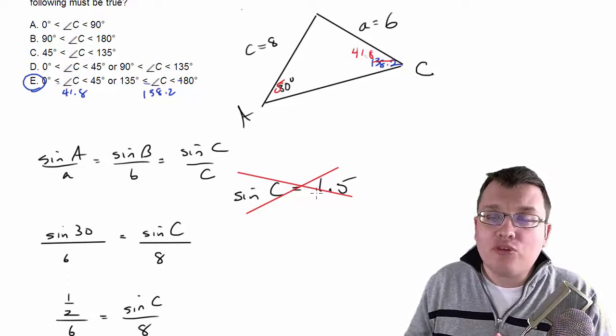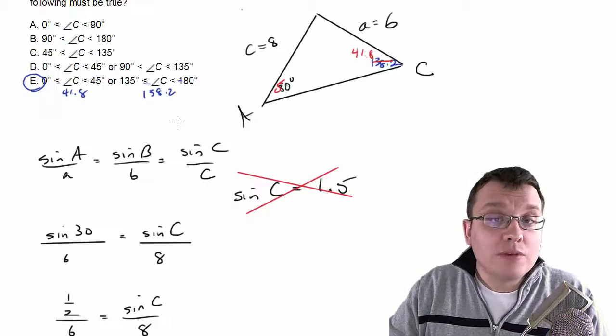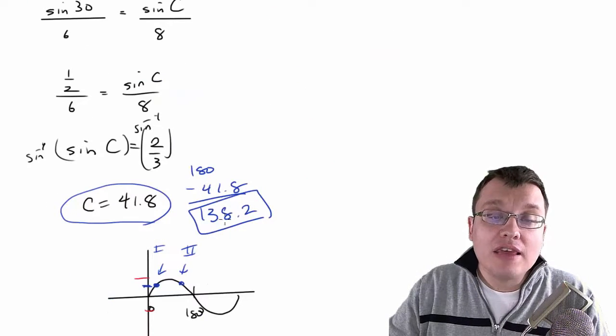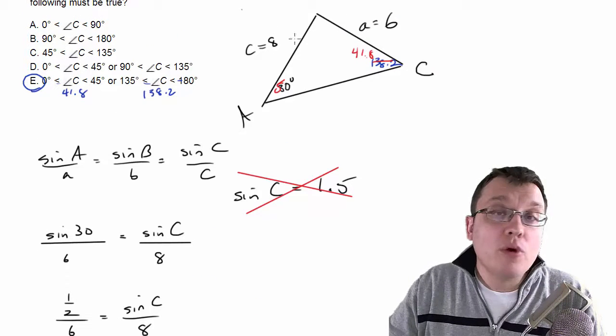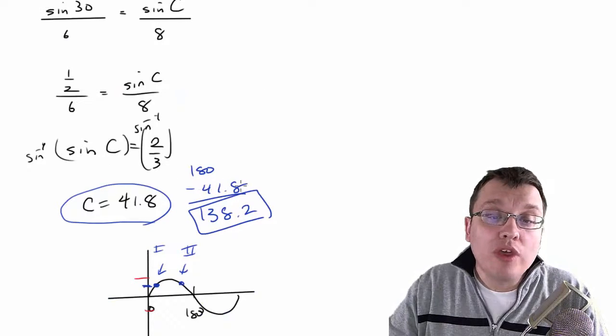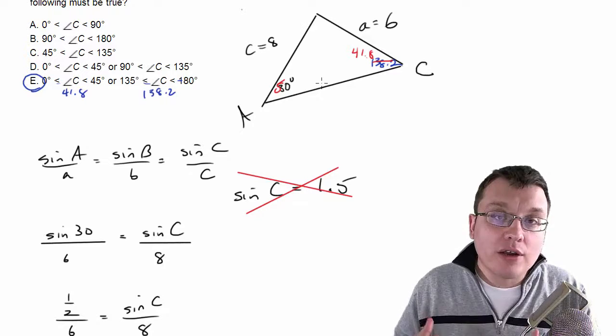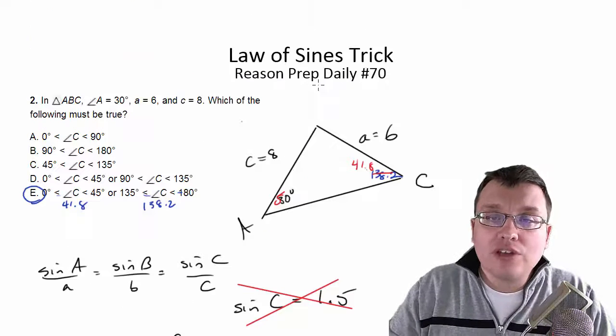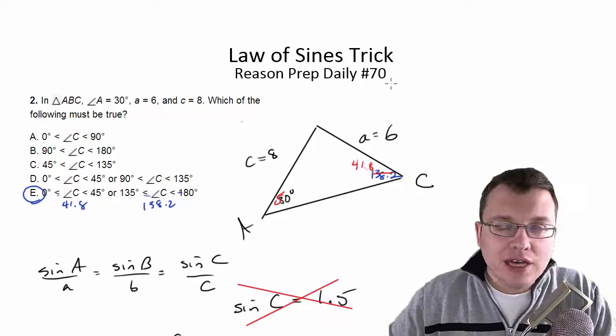And those are your three cases. Either no triangles are possible, and that happens when you can't even get any angle. Two triangles are possible, and that happened in this case when you try the answer you get and the supplement to see if they both work as triangles, and they did. Or you get one answer, in which case only one of your angles will actually fit in your triangle to make a legal triangle. So there's your little trick. You don't need to memorize all that other stuff related to law of sines. You can use this to figure out your answer every single time.